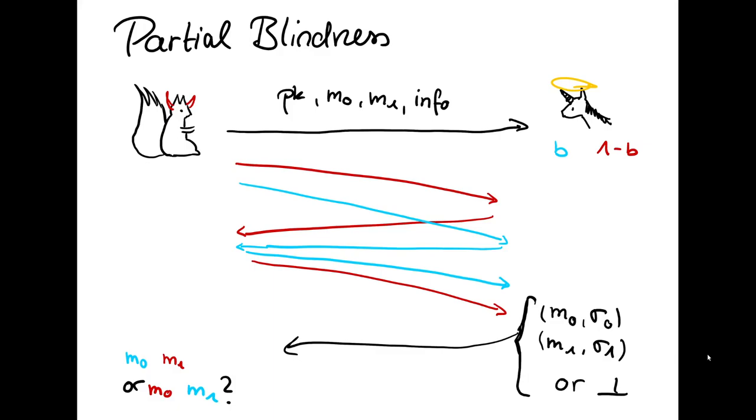More formally, we have an indistinguishability-based property where the signer gets to pick two messages, a public key and a tag info. Then the user gets to pick which message he will use in which of the two interactions they're now about to have.